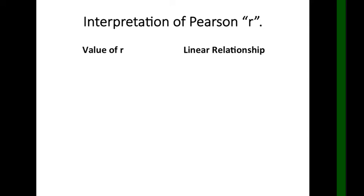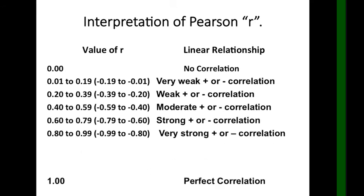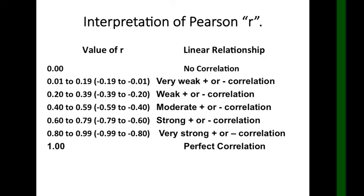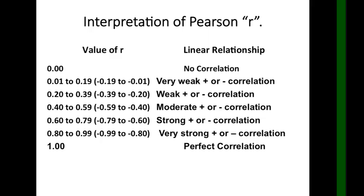To interpret the Pearson r, let's have a review. We have the following linear relationship. For 0.01 there is no correlation, up to 1.00 which is perfect correlation. You can take a screenshot for this to follow the discussion later. For example, if r is equal to 0.25, the relationship can be regarded as negligible positive correlation. When r is negative 0.25, the relationship is said to be negligible negative correlation. The negative is determined by the absolute value, but in the given table there is both negative and positive so no need to compute the absolute value.